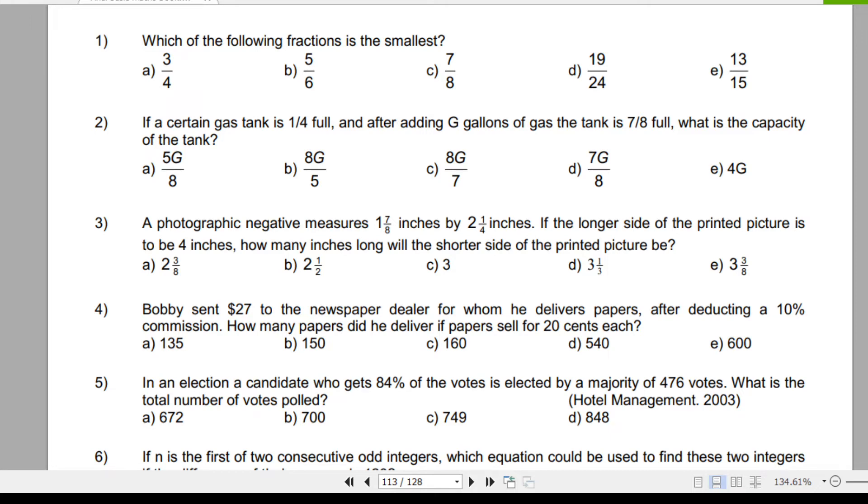Question number four. Bobby sent $27 to the newspaper dealer for whom he delivers papers after deducting a 10% commission. How many papers did he deliver if papers sell for 20 cents each?